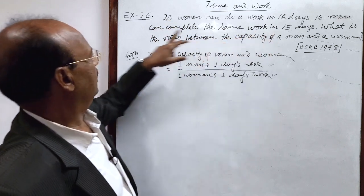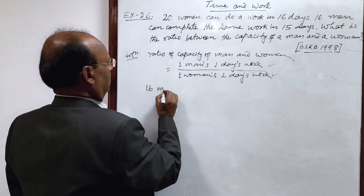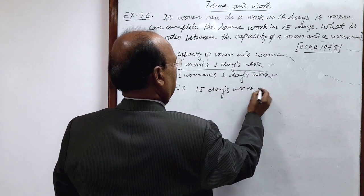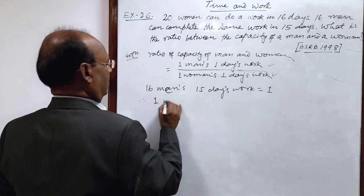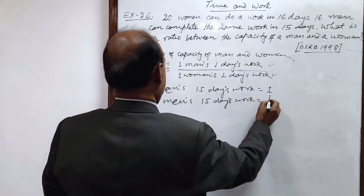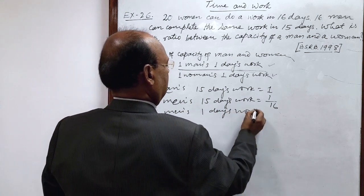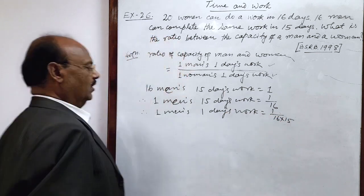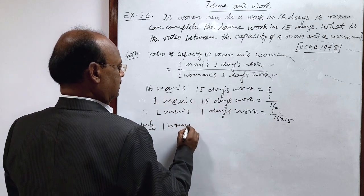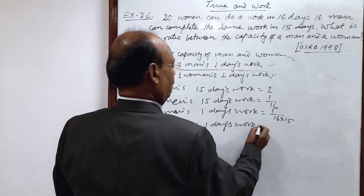16 men can complete the same work in 15 days. So we will find one man's one day's work. 16 men's 15 days work is equal to 1. Therefore, by unity method, one man's 15 days work is equal to 1 by 16. Therefore, one man's one day's work is equal to 1 by 16 into 15, which is 1 by 240.